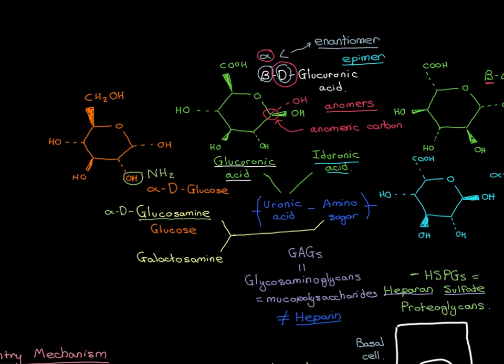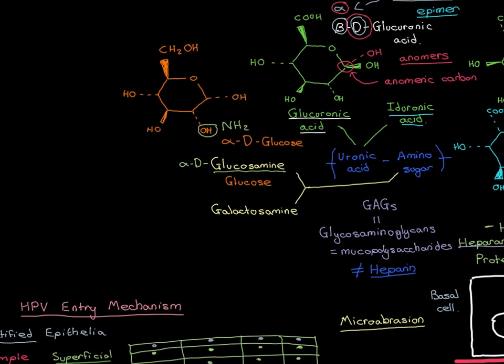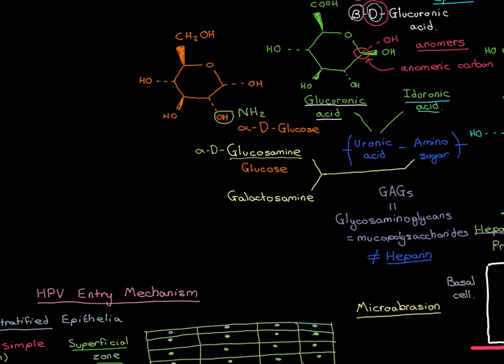That's the structure of glucosamine, one of the examples of an amino sugar that can be bound to the uronic acid sugar. Now let's do galactosamine. To discuss galactosamine, it's useful to first discuss the structure of galactose.